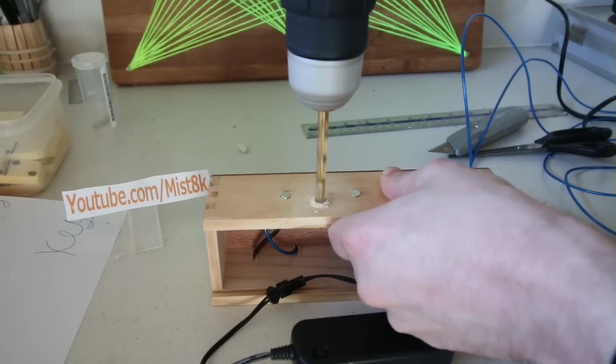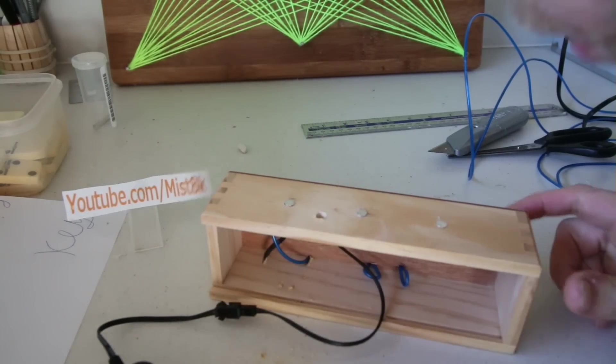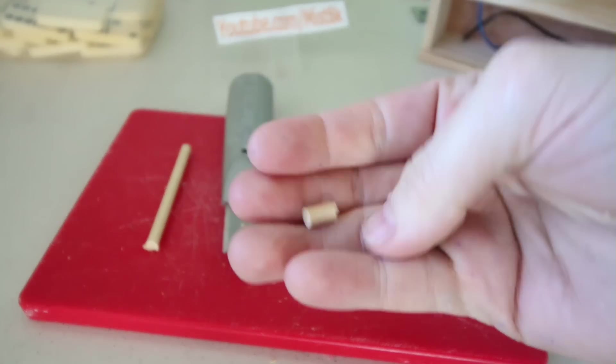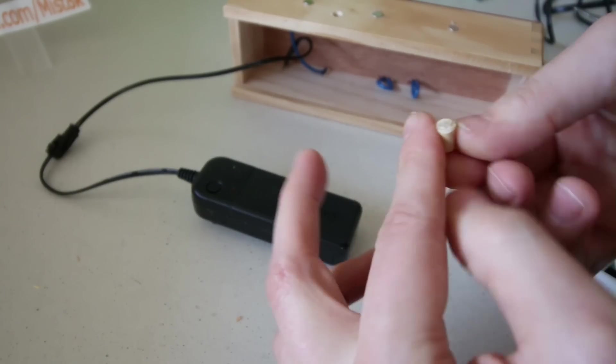I drilled a large hole just behind the magnets. I then chopped down a very small piece of a wooden dowel. This was then glued to the button on the battery pack.